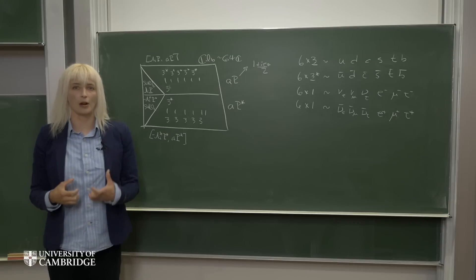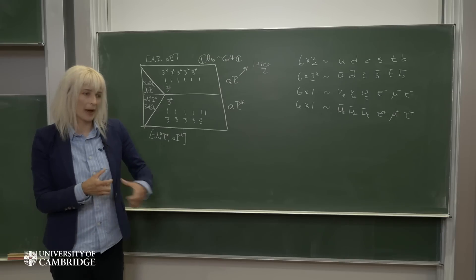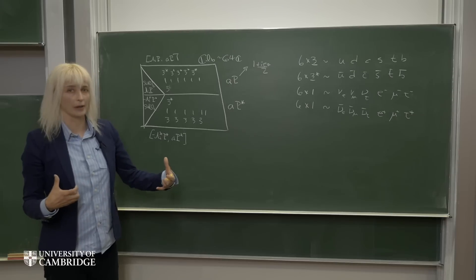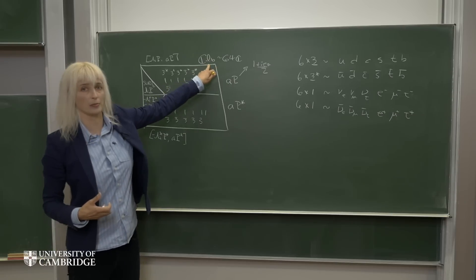So we started with the complex octonions. We had them act on themselves repeatedly. This generated a 64 complex dimensional space, which is the Clifford Algebra CL6.